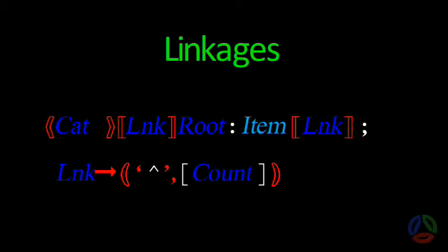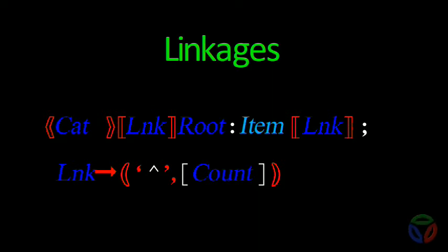A linkage is one step in a type specification that does not contribute to the base type of the items being declared. A series of linkages connects an identifier with its base type in the specification sequence. Keep in mind that a root type given in a declaration may actually contain one or more linkages in its definition somewhere else before an actual base type is reached. Base types are terminals for any type specification. Each linkage implies how the item must be addressed, subdivided, or accessed in order to get to a single element of its base type. The basic linkages are pointer to and array of.